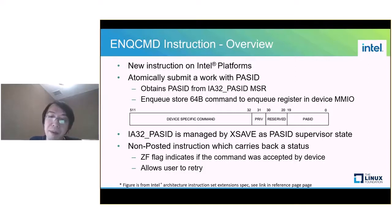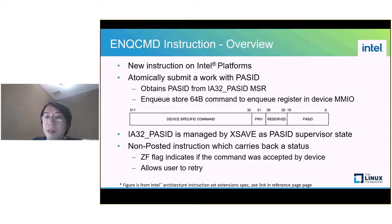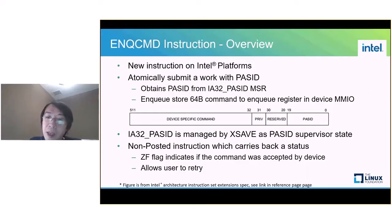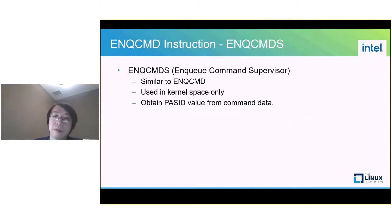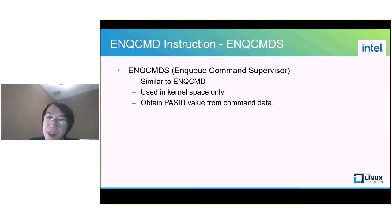This mechanism also prevents a malicious PASID from being written to the device from user space. ENQCMD is a non-posted instruction which carries a status back indicating whether the command was accepted by the device or not. For example, submission will fail if the shared work queue is already full. This allows the submitter to know the submission status and perform a retry if needed. ENQCMDS — enqueue command supervisor — is similar to ENQCMD but only works in kernel space and obtains the PASID value from the command data directly.